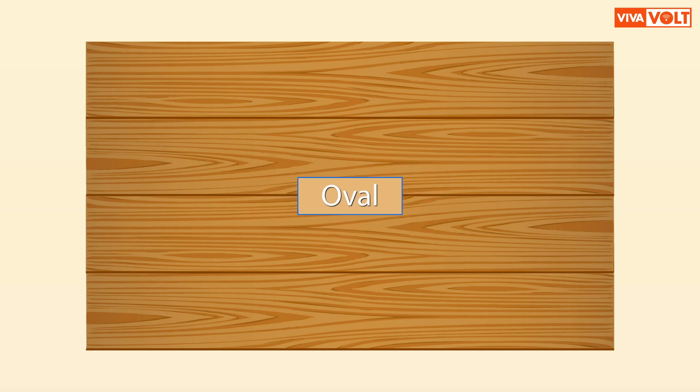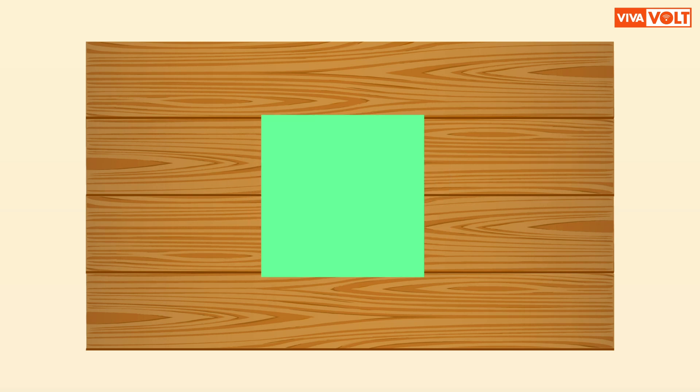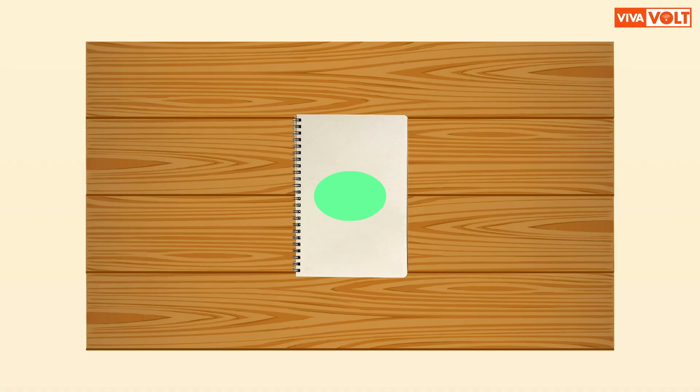Oval. Take a colored sheet. Draw an oval on it and cut it using scissors with the help of an elder. Paste the oval form in your notebook. After this interesting activity, let's learn about solid shapes.